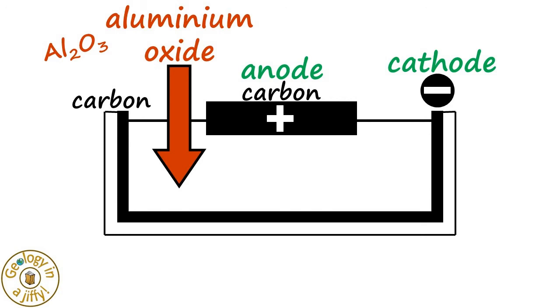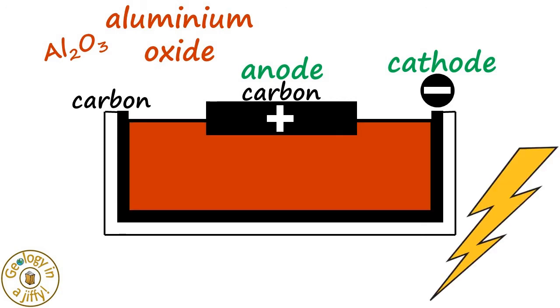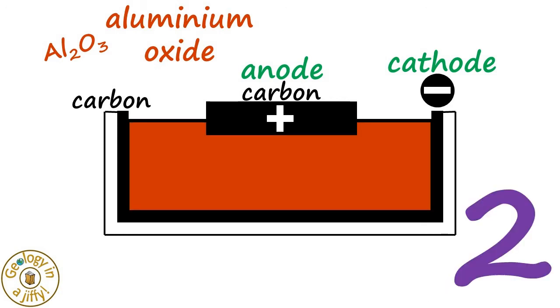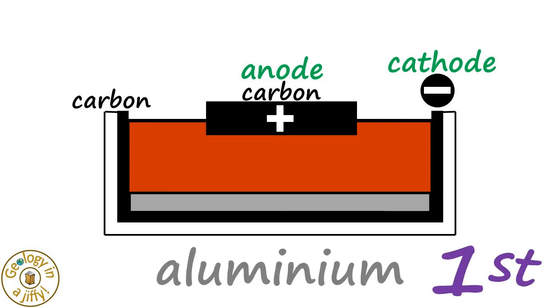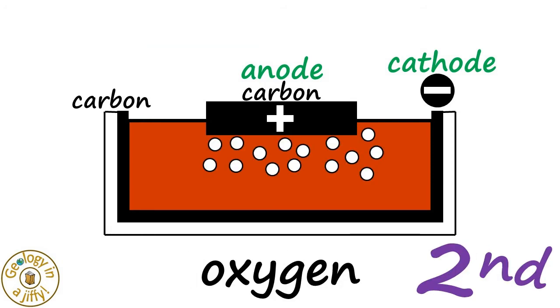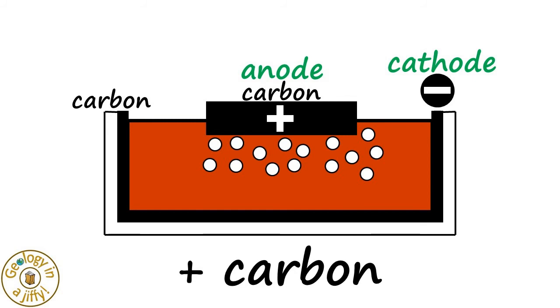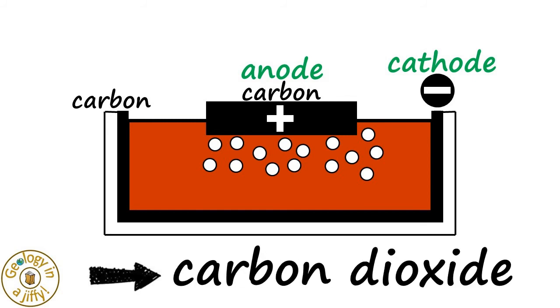Aluminium oxide is then tipped in from above and electrolyzed, giving us two main products. The first being aluminium, the second being oxygen, which then reacts with the carbon in the anode to make carbon dioxide gas.